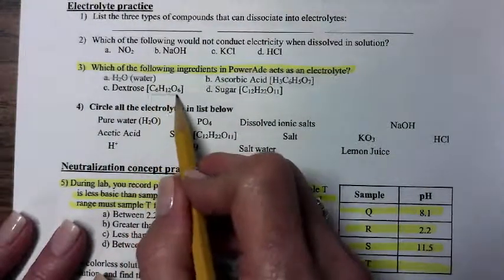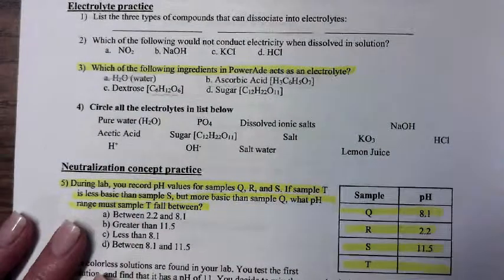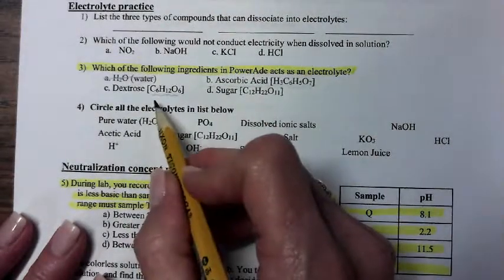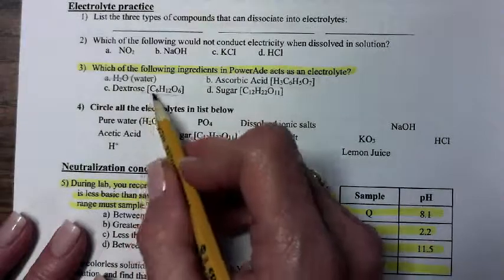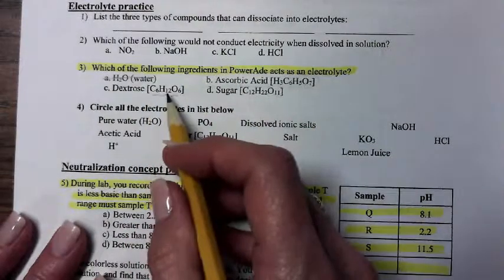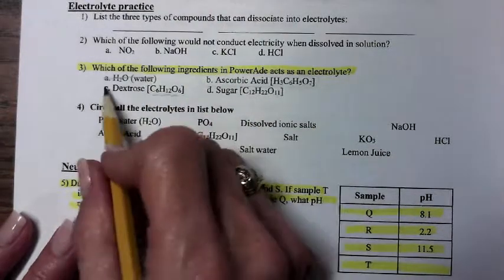Dextrose, right there, that is a covalent compound. How do I know? Well, there's a whole bunch of non-metals put together and there's no hydrogen, so I know it's not an acid, so that can't be it.